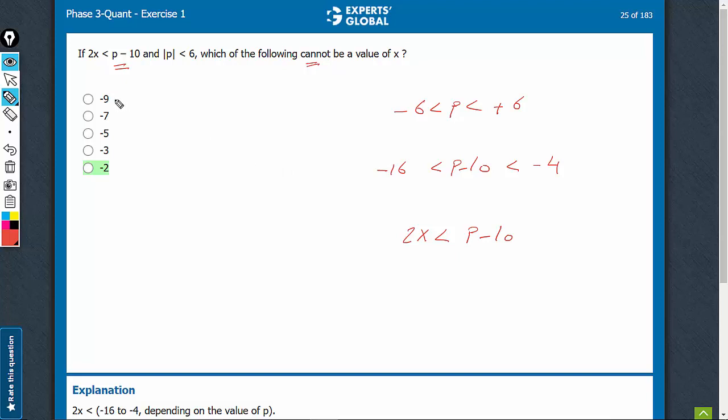Some students will end up choosing minus 9, thinking that x has to be greater than minus 8. That is not correct. Minus 9 is possible and therefore should be eliminated.